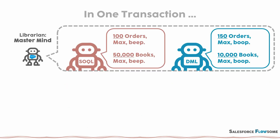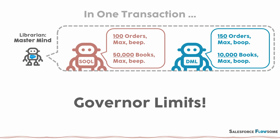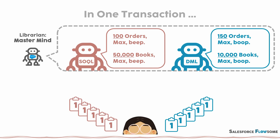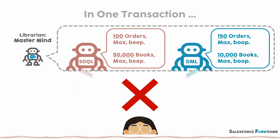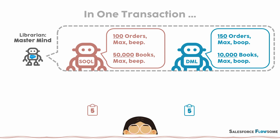And in one transaction, you'll have limits on how many orders you can issue for each part, and how many records you can access or change. This is what we call the governor limits, which we will explain more thoroughly in another video. Since there are limits, when you are issuing the orders, always make sure to find the most efficient way to do so.